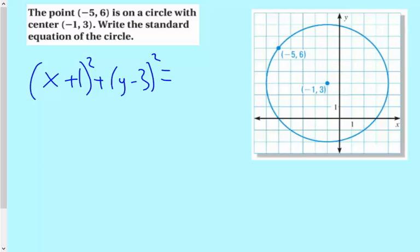Now we've got to find r. Well, this is kind of nice because you can just count 1, 2, 3, 4, 5. 5 squared is 25.